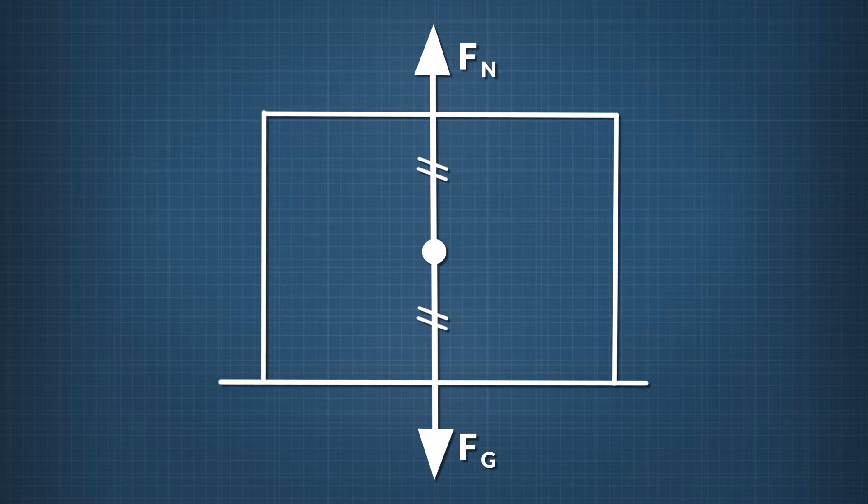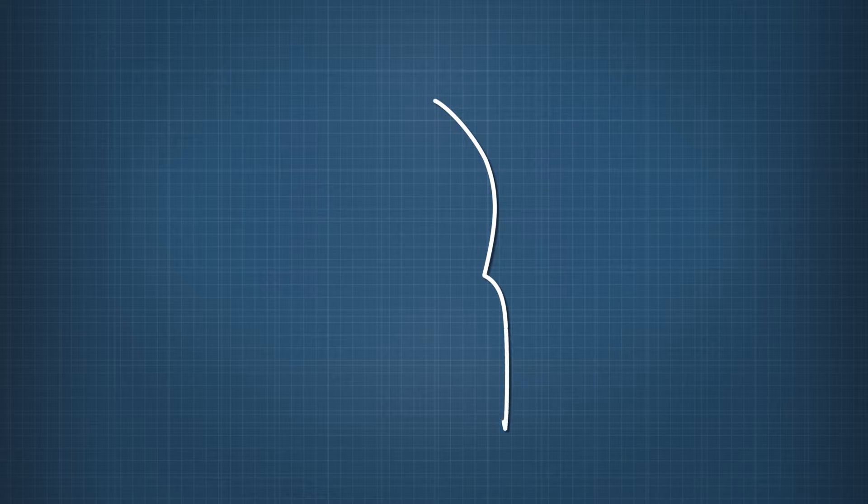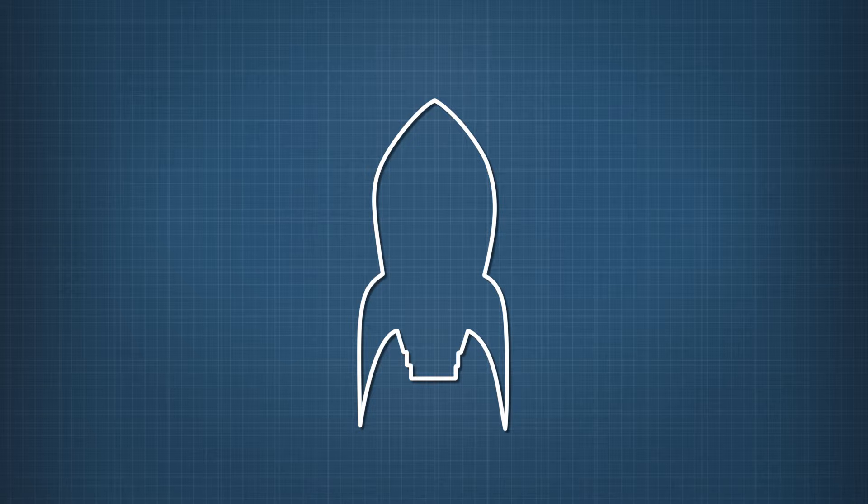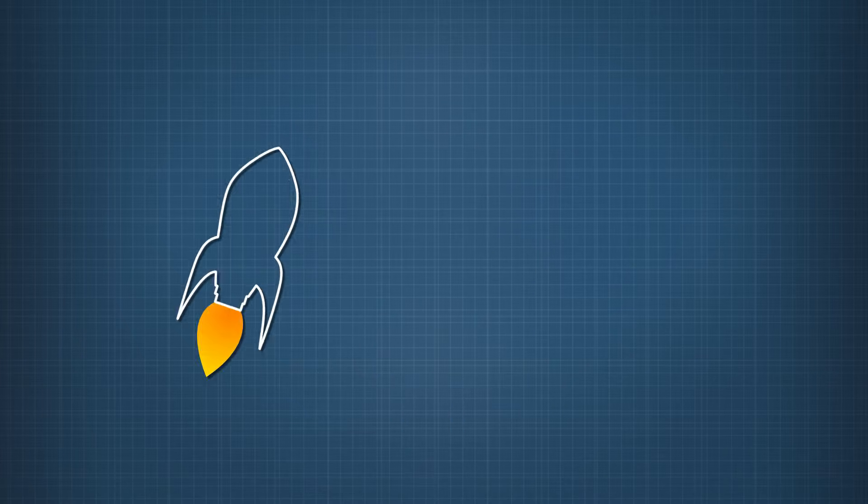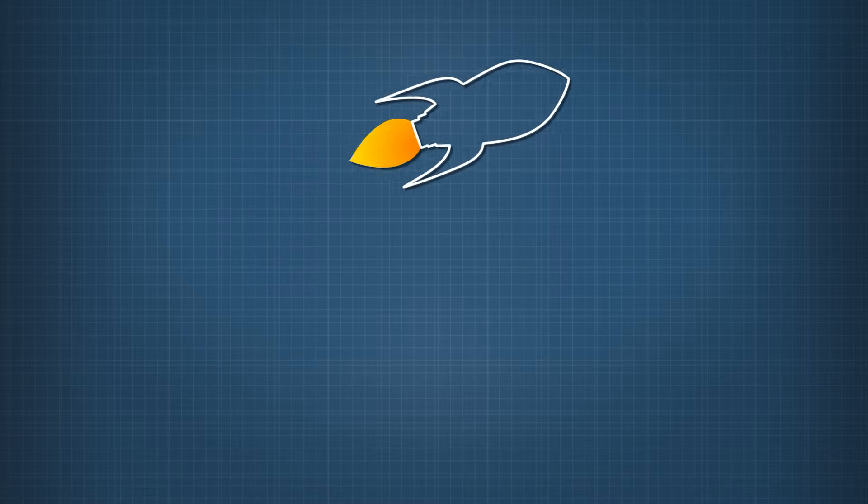Now let's try an example where the object is in motion. After building a model rocket, you launch the rocket and watch it turn sideways while the fuel is still burning. At that moment, with the rocket pointing horizontally and the engine pushing it forward, what are the forces on the rocket?